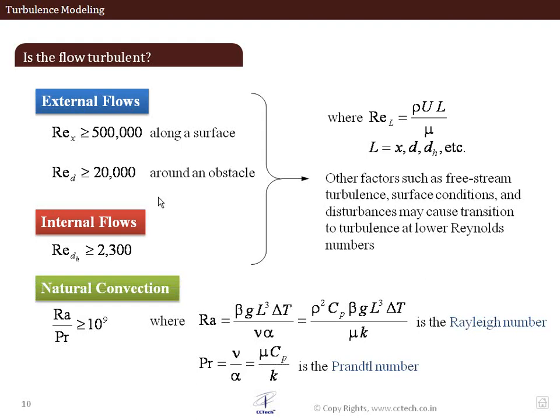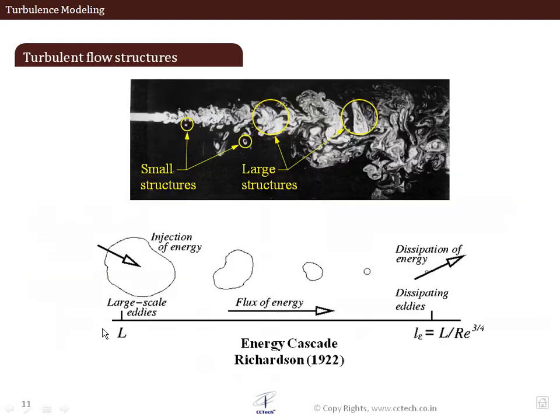Natural convection problems are to be understood in a different manner though. They are defined in terms of Rayleigh number, Prandtl number, and Grashoff number. Grashoff number is the ratio between the Rayleigh and Prandtl number. If this ratio exceeds the value of 10 to the power 9, then we say that the natural convection phenomena is also becoming turbulent. Most of the time natural convection is a laminar flow, but as the flow proceeds inside a chimney, beyond a point it might become slightly turbulent as well.